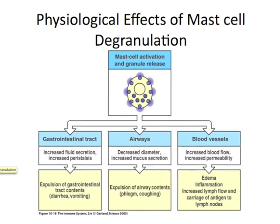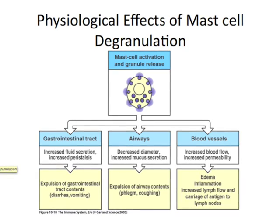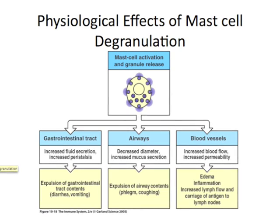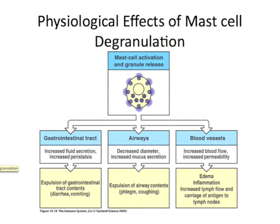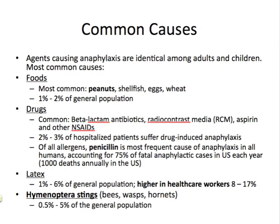Here's the next slide from that original presentation. It has your mast cell on top — it doesn't show the cross-linked IgE antibodies — but when you get the degranulation, it leads to GI problems, airway problems, and blood vessel problems. We really saw the airway problems and blood vessel problems in our patient.